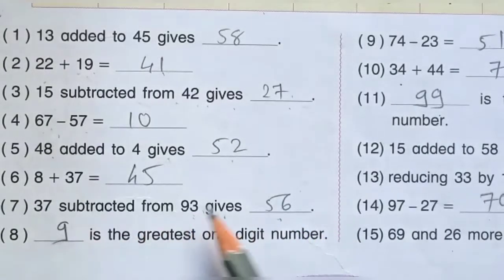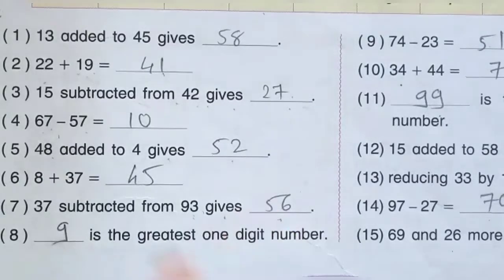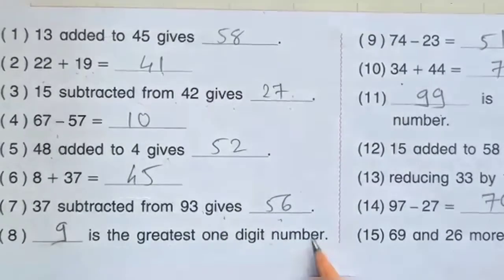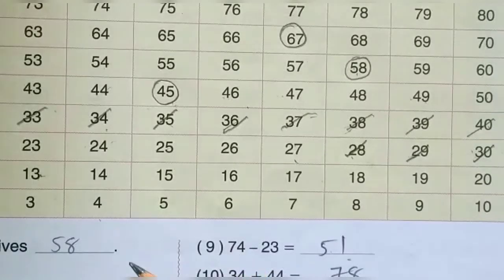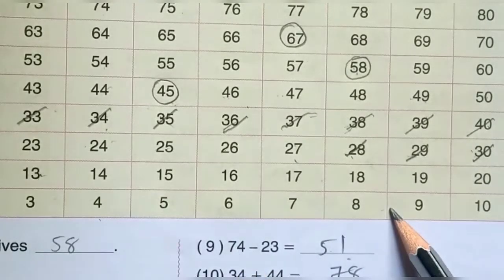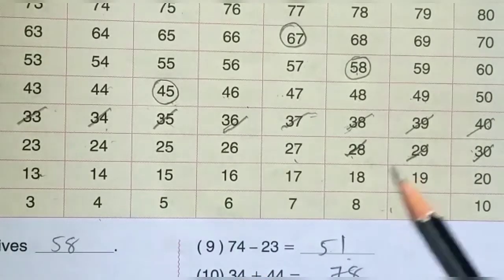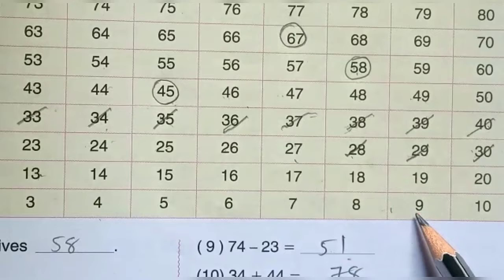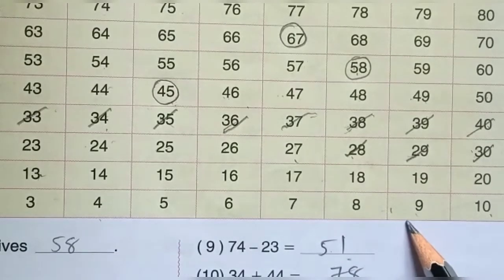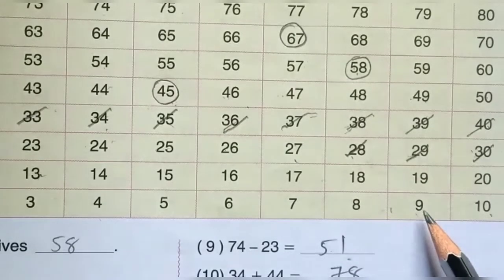Next number 8: dash is the greatest 1-digit number. 1-digit यानि 1 to 9 numbers. तो the greatest number is 9 — 10 would be a 2-digit number. Greatest 1-digit number is 9.